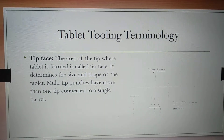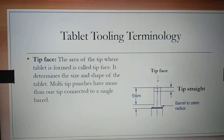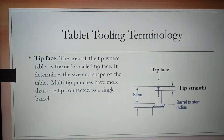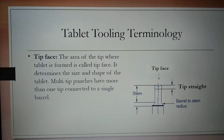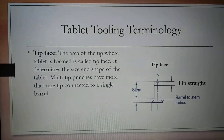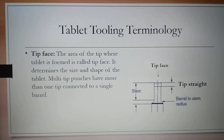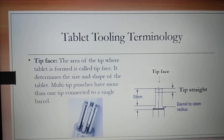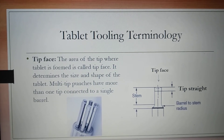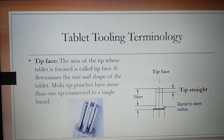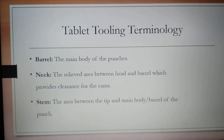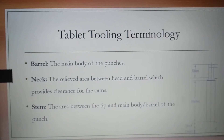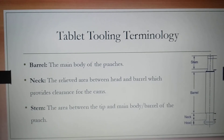The next terminology is tip face — the area of the tip where the tablet is formed is called tip face. It determines the size and shape of the tablet. Multi-head punches have more than one tip connected to a single barrel. The barrel is the main body of the punches.